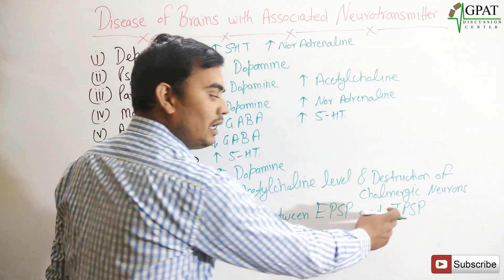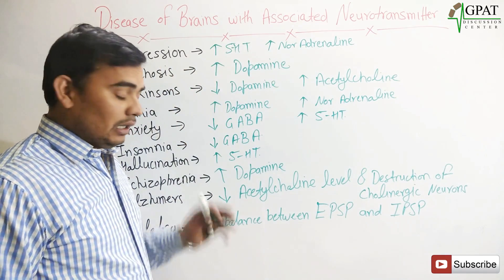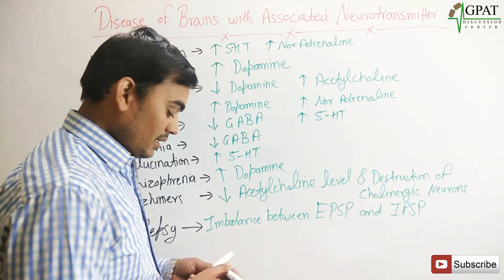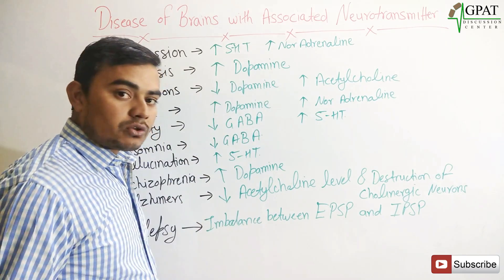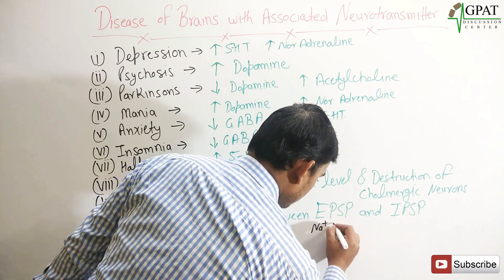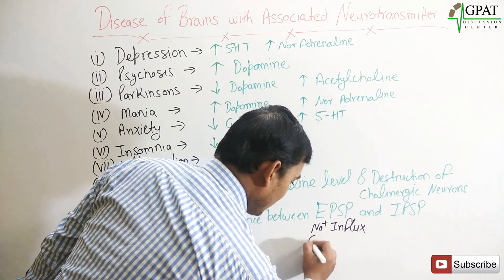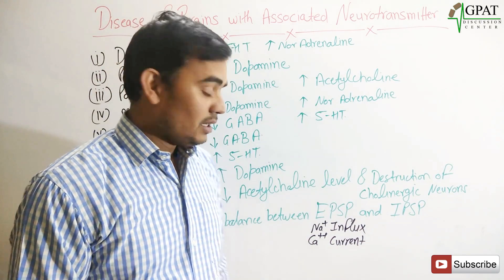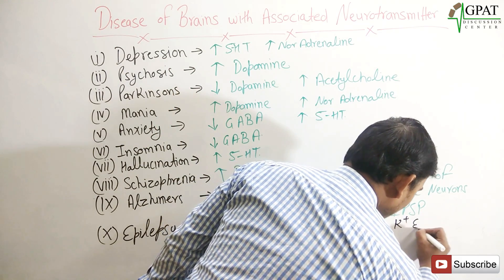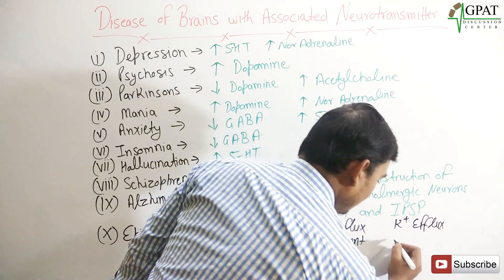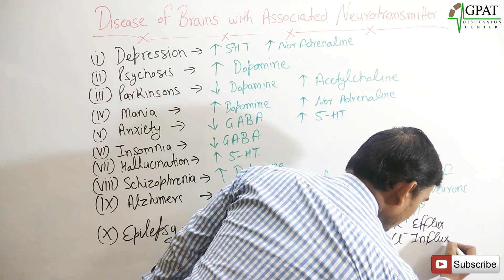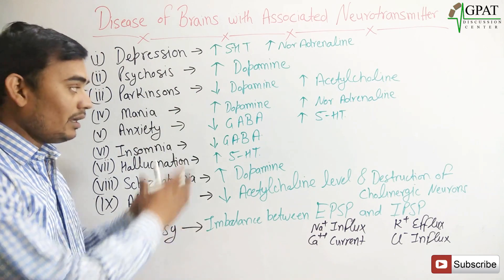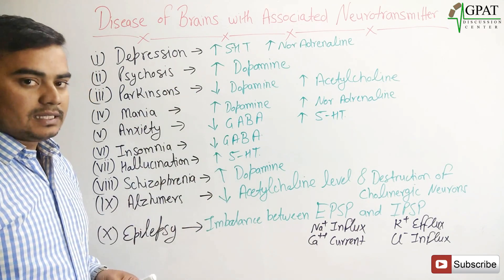Excitatory post-synaptic potential and inhibitory post-synaptic potential. For EPSP, sodium ion influx and calcium current are mainly responsible. For IPSP, potassium ion efflux and chloride ion influx are mainly responsible. So these are the major diseases associated with the brain and the various neurotransmitters which affect these diseases. Thank you.